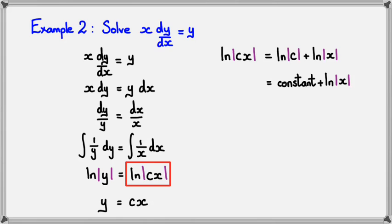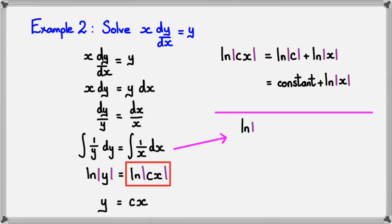If you're not sure how that works, bear with me. I'll show this another completely different way. Going back from the integration step, instead of writing ln(cx) I'll write ln(y) = ln(x) + c. From here, to get rid of the ln's I'll use exponentials.